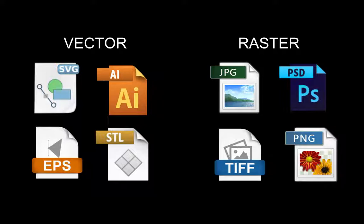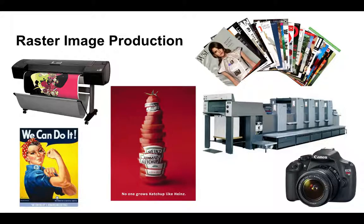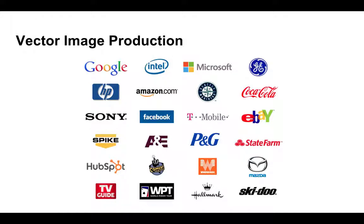Adobe Illustrator is also a common professional-grade graphic design software used in industry when working with vector files. For raster images, you may have heard of JPEGs, TIFFs, or PNG files, all of which are raster file formats typically made with a camera or using professional software such as Adobe Photoshop. For raster image production, typically it's something like a poster, magazines, or photographs that are produced using various types of printers or offset presses.